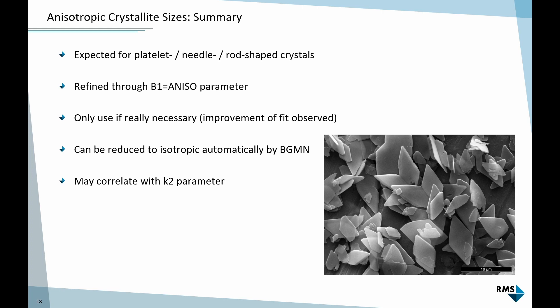To summarize anisotropic crystallite sizes, they are also expected for anisotropic crystallite shapes, obviously. We refine them through the B1 parameter by setting it to anisotropic, just use the mouse. It's another one of these parameters we should only refine anisotropically if it's really necessary, if we really see different peak widths and we see an improvement once we set it to anisotropic. Otherwise, revert it back to isotropic to reduce correlations and stabilize the model.